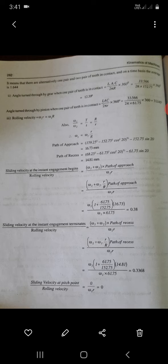Now sliding velocity at the instant of engagement to rolling velocity ratio: we have (omega_1 + omega_2) into path of approach upon omega_1 into r.